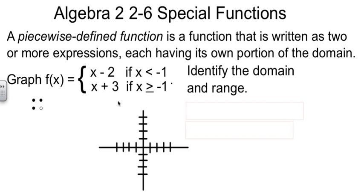So let's try to graph this first piecewise function. f of x is equal to x minus 2 if x is less than negative 1, and it's equal to x plus 3 if x is greater than or equal to negative 1. Let's work off the first line, x minus 2. I need to have some values that are less than negative 1. So I'm going to pick negative 2. Negative 2 minus 2 is negative 4. So I'm going to put a point at negative 2, negative 4.